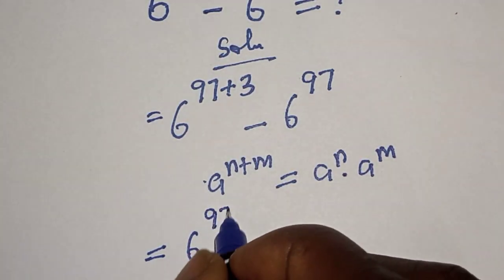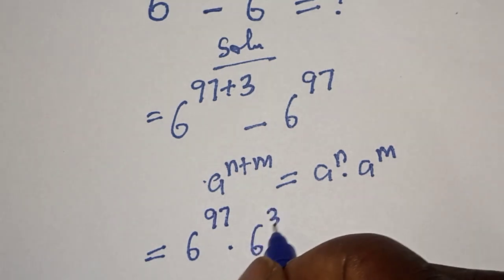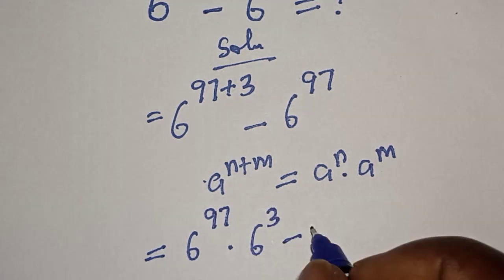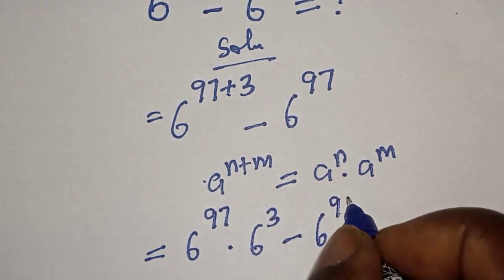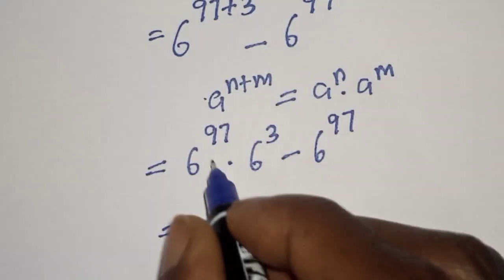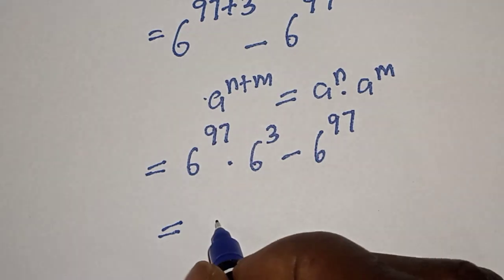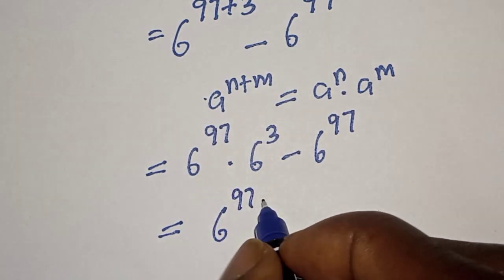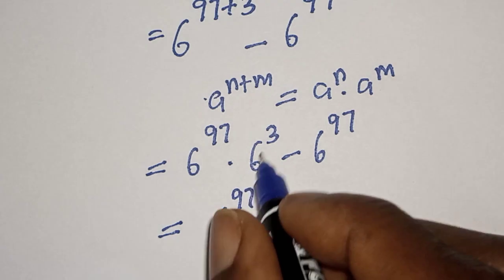minus 6 to the power of 97. This is equal to 6 to the power of 97 is common, let's bring it out in brackets. This divided by this one times this, we have 6 to the power of 3